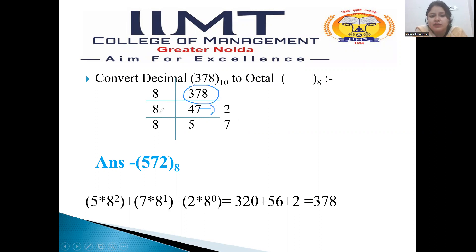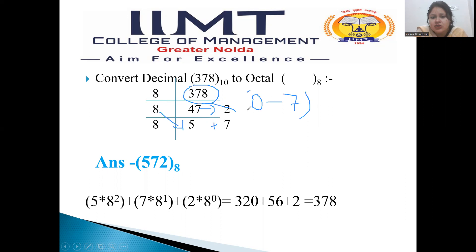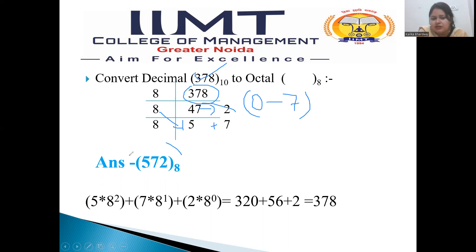Again, we divide 47 by 8. It goes up to 5 times — 8 into 5 is 40, plus 7 is 47 — so the remainder will be 7. As the base is 8, remainders from 0 to 7 can be taken. So 378 written in octal is 572 to the base 8. This base notation identifies that this is an octal digit.